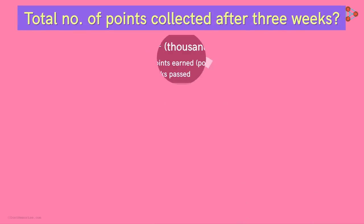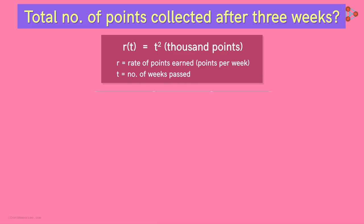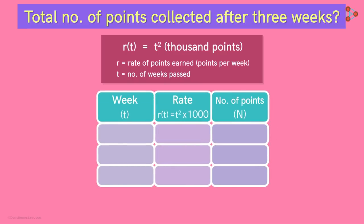You could probably say it is easy. From this relation, we can find the rate for each week. In week 1, the rate will be 1000 points per week. In week 2, 4000 points per week. And in week 3, it will be 9000.